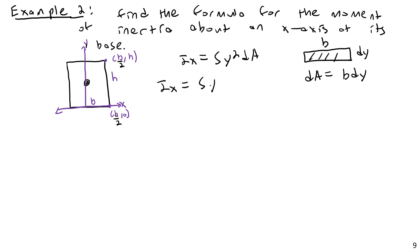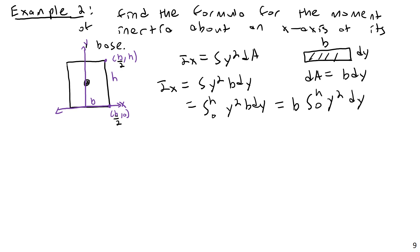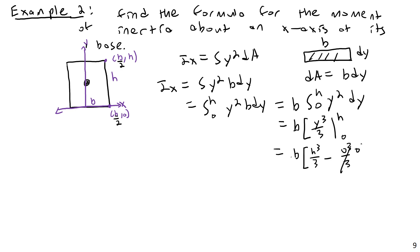Ix is still equal to the integral of y squared times B dy, but our bounds of integration change. We go from zero to H this time: B times the integral from 0 to H of y squared dy. That gives B times [y³/3] evaluated from 0 to H, which is B times [H³/3 − 0], so Ix equals BH³/3.